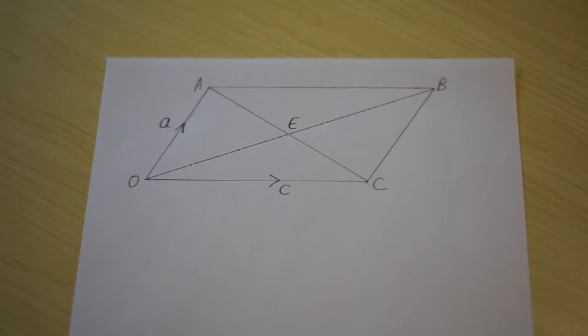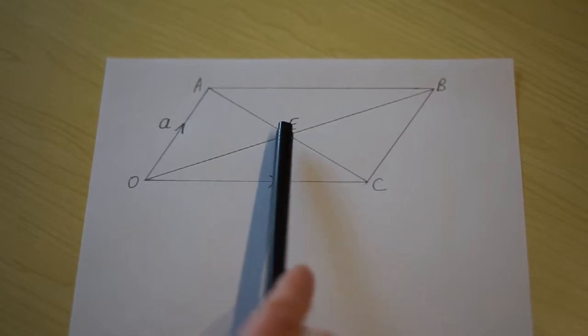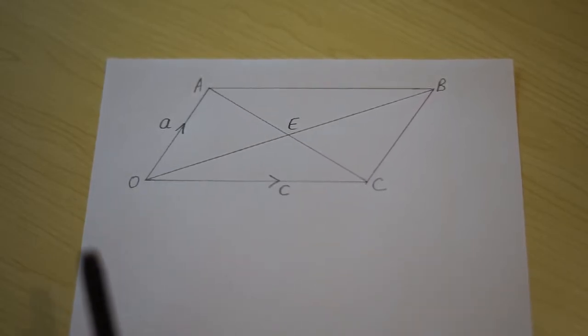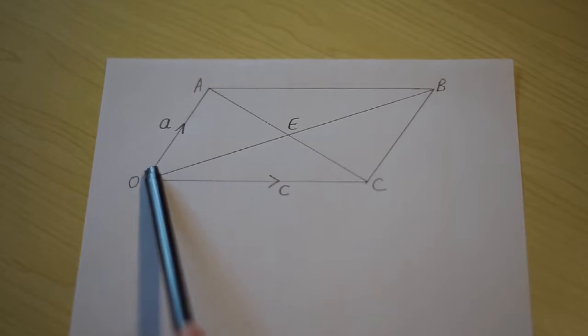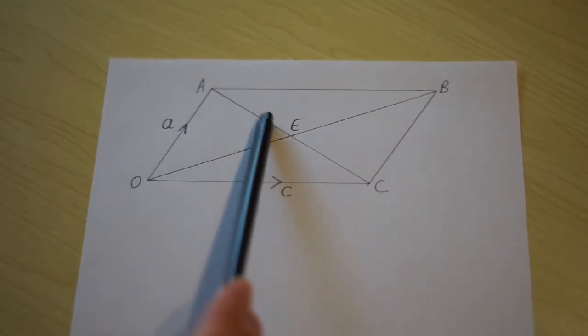This video will show you how to use vectors to prove that the diagonals in a parallelogram bisect each other. Here's a parallelogram labelled up. Note that vector OA is labelled with small a and OC is labelled with small c. So if the diagonals bisect each other, then E must be the midpoint of both OB and AC.